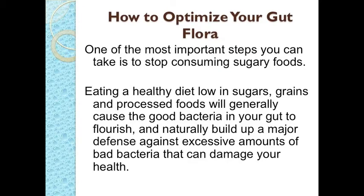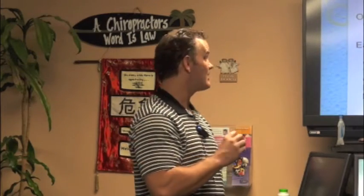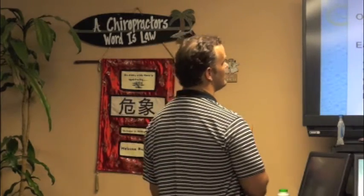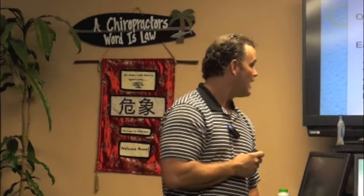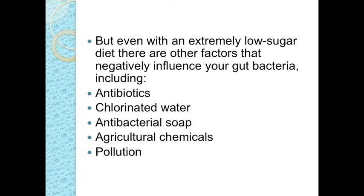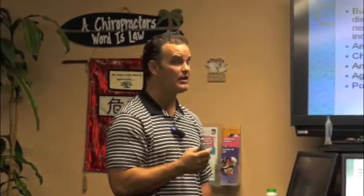How to optimize your gut flora? You need to stop consuming sugary foods because bacteria love sugar and that's going to make them go crazy. You need to eat a healthy diet low in sugars, grains, and processed foods — that will cause your good bacteria to flourish and naturally build up your body's defenses against bacterial infections. But even if you have an extremely low sugar diet, if you take antibiotics, that's going to kill the good and the bad, and your body won't have any natural defenses against foreign invaders.